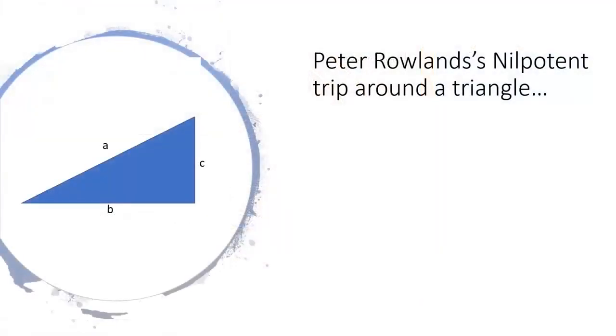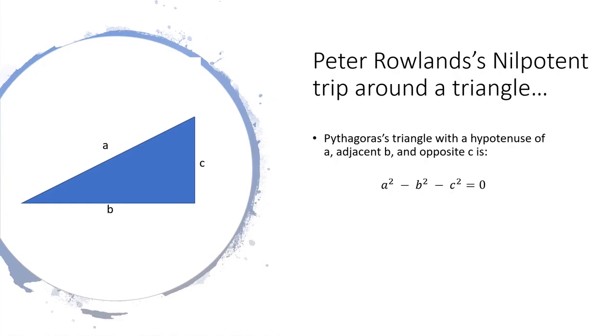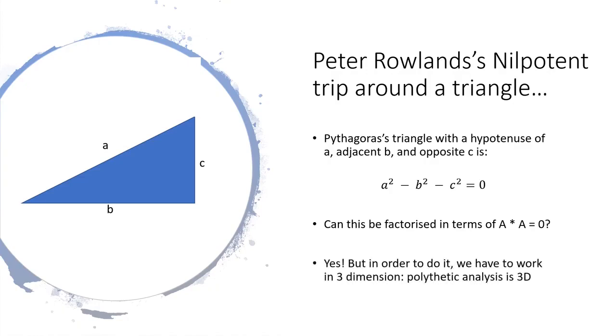There's a very simple way of explaining Rowland's mathematics. It basically involves a Pythagorean triangle, where the square of the hypotenuse is equal to the sum of the squares on the other two sides. So if the hypotenuse is A, and the other two sides are B and C, then you can say that A squared minus B squared minus C squared is zero. So can that equation be factorised in such a way that something multiplied by itself can represent A squared minus B squared minus C squared, and in turn represent zero?